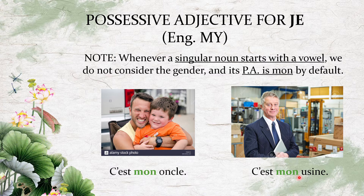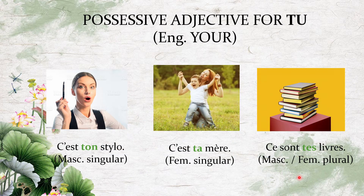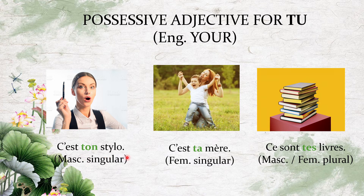The next possessive adjective is for 'tu,' which in English is 'your.' The pattern is similar to mon/ma/mes but starts with the letter T. For masculine singular it is 'ton,' for feminine singular it is 'ta,' and for masculine or feminine plural it is 'tes.' For example: 'c'est ton stylo' — this is your pen — because 'stylo' is masculine singular. 'C'est ta mère' — this is your mother — because 'mère' is feminine singular. 'Ce sont tes livres' — these are your books — because it is plural.